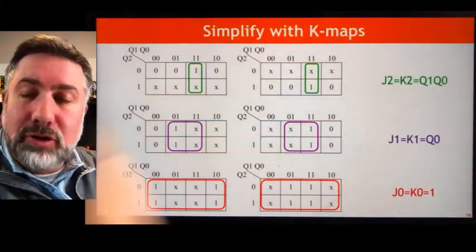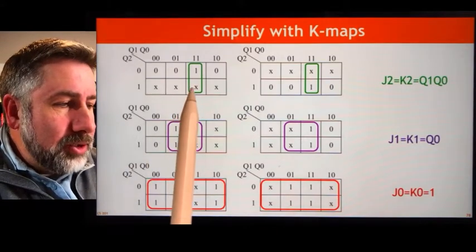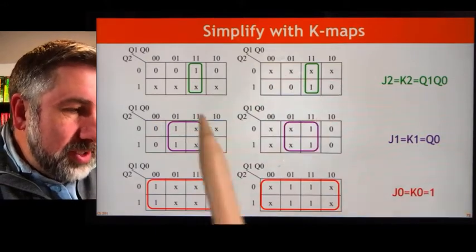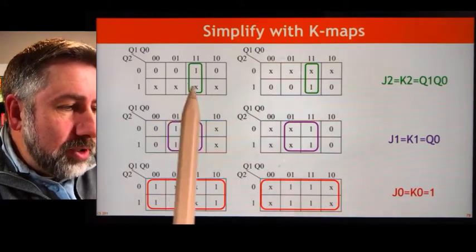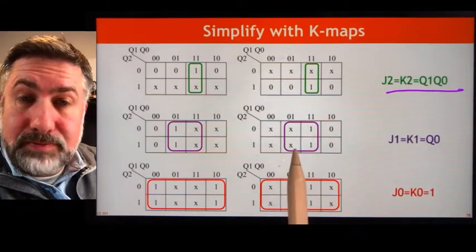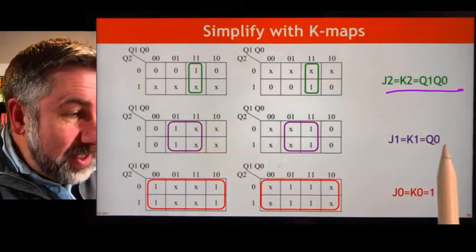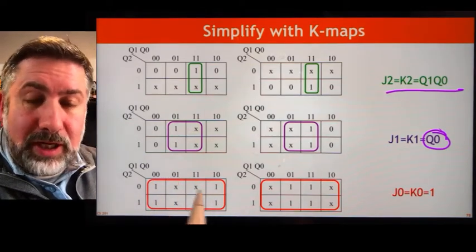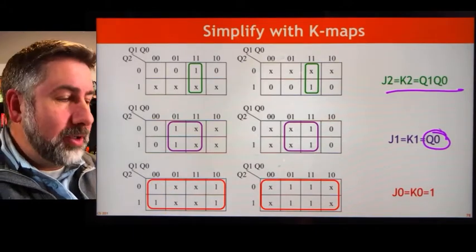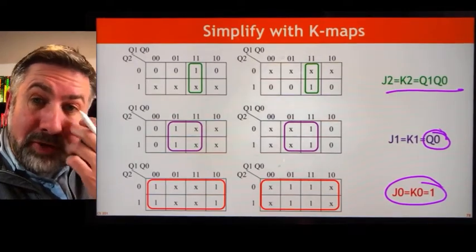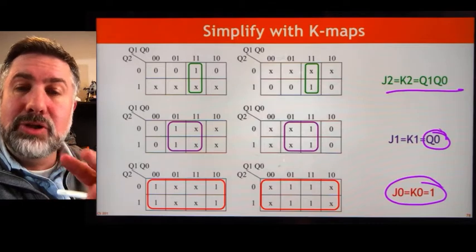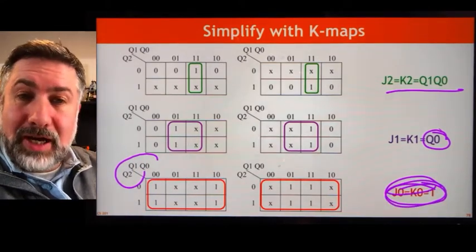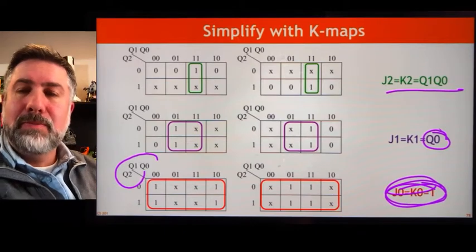We go through our K-map process — six K-maps, one for each flip-flop input. The J and K for bit 2 simplify to the same value: Q1·Q0. J1 and K1 simplify to the same value: Q0. J0 and K0 — the entirety of the K-map is filled with ones or don't-cares, so the value is simply 1. This makes sense because one function of the JK flip-flop is that if J and K are both 1, the machine toggles. If you want that lowest bit toggling every time, providing 1 to both inputs causes it to toggle every cycle.